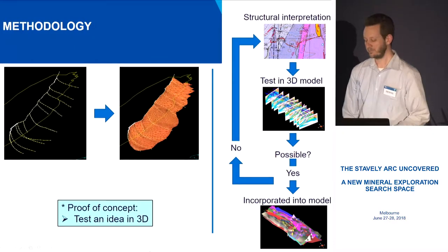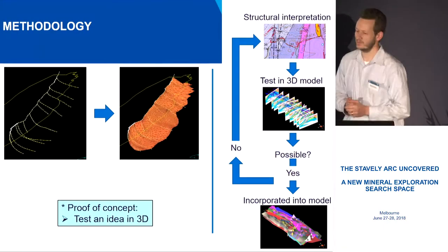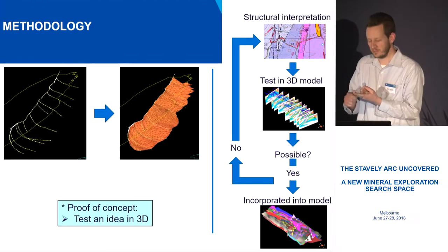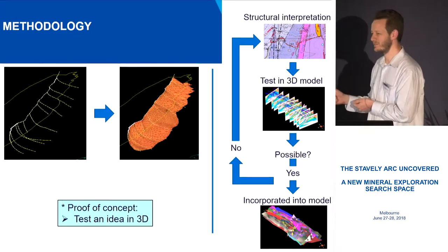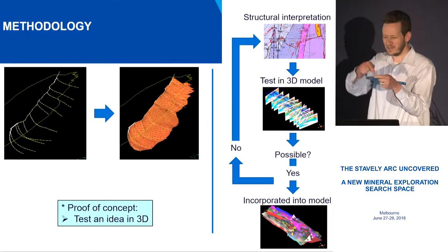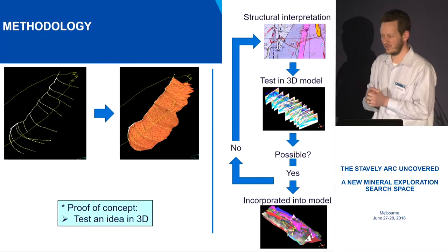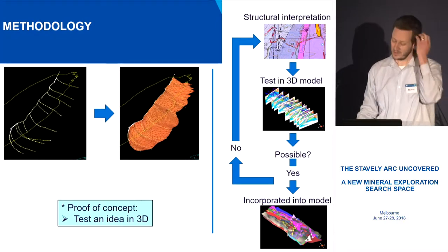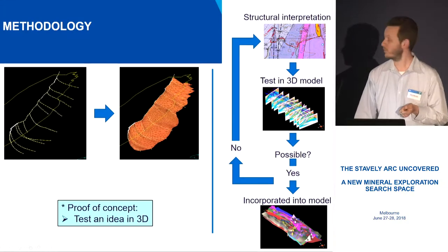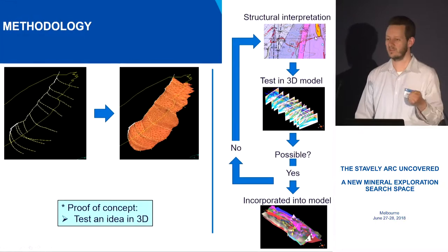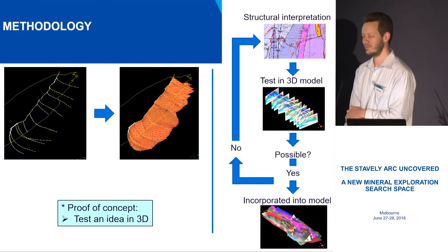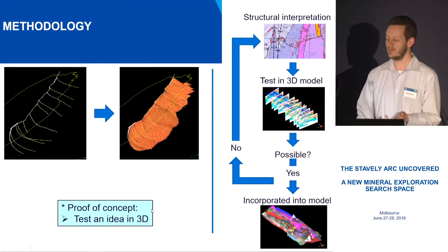There was another important iterative concept: when you do qualitative interpretations, just because all your overprinting relationships work and it's completely geological doesn't necessarily mean it's going to work when you build your 3D model. Sometimes you look at it and think a structure is dipping in a certain direction, but that has implications on some other structure elsewhere and suddenly it's not geologically possible to build that model. So we test the structural interpretation in 3D — is it possible, yes or no? If not, we go back and revisit it. This is a downside to explicit modeling, but the good thing is it's a proof of concept.